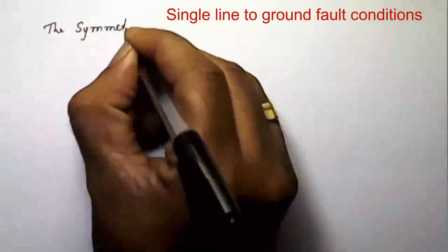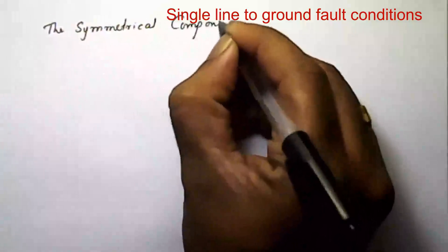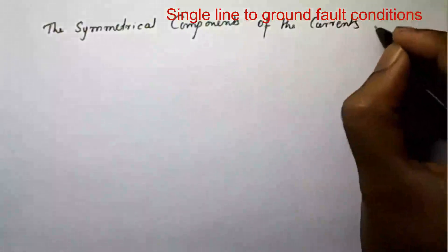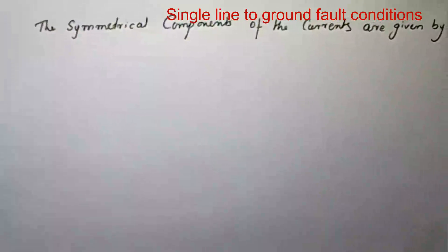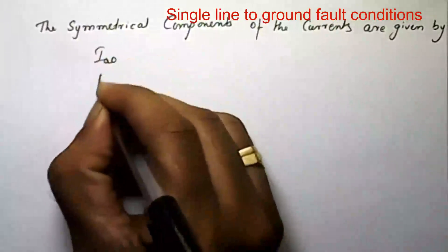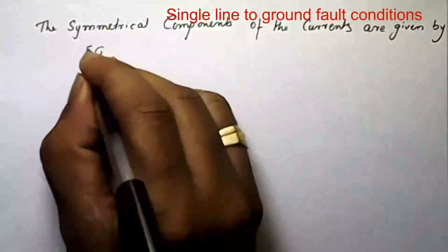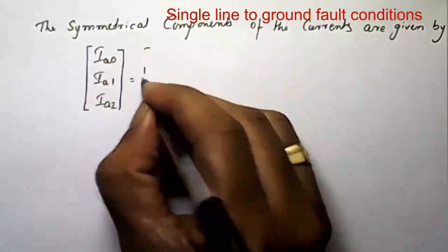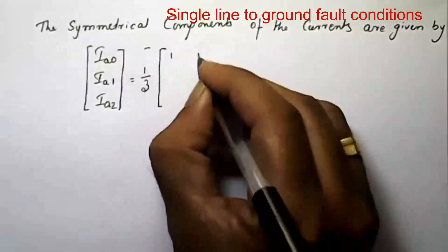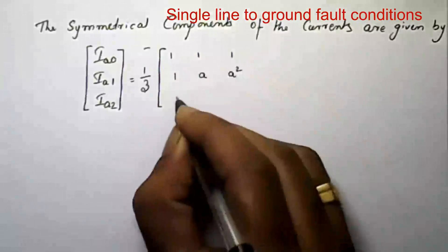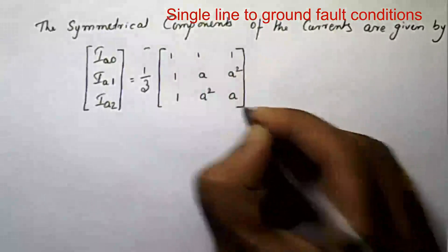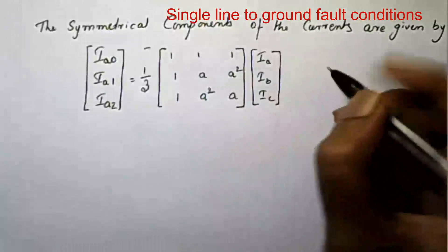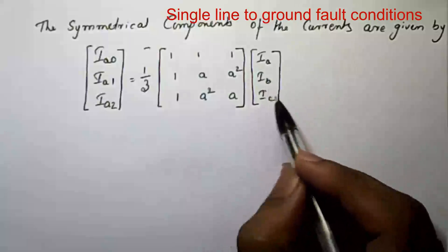Applying the symmetrical components of currents, the symmetrical components are given by: Ia0 (zero sequence current), Ia1 (positive sequence current), Ia2 (negative sequence current) equals one-third times the matrix [1 1 1; 1 a a²; 1 a² a] multiplied by [Ia, IB, IC]. Now substitute the initial condition that IB is equal to IC is equal to zero.